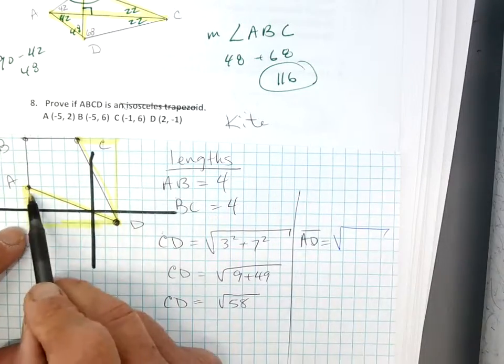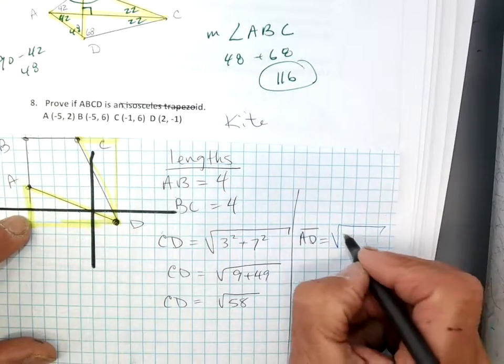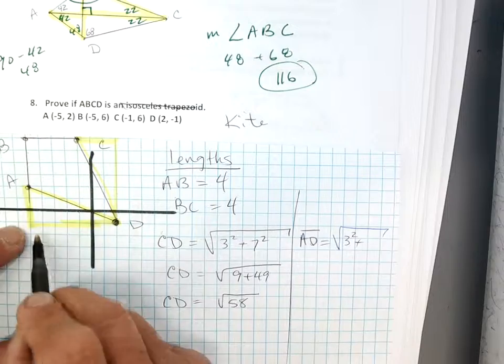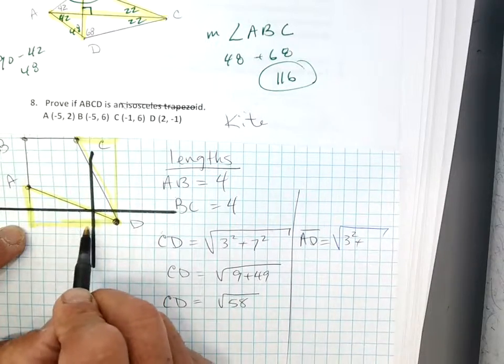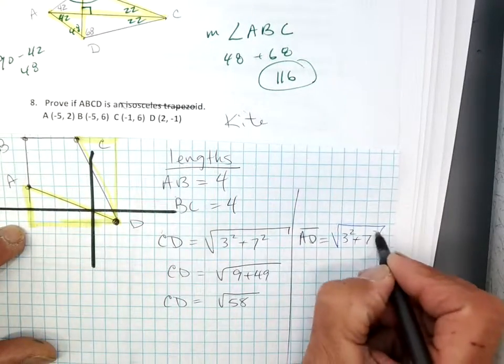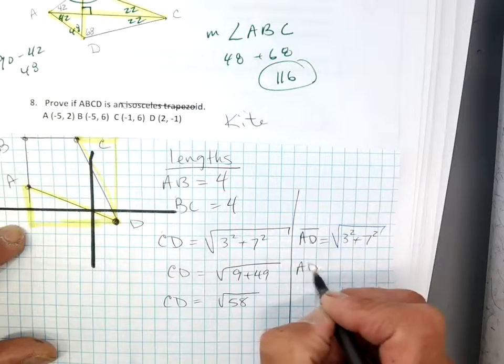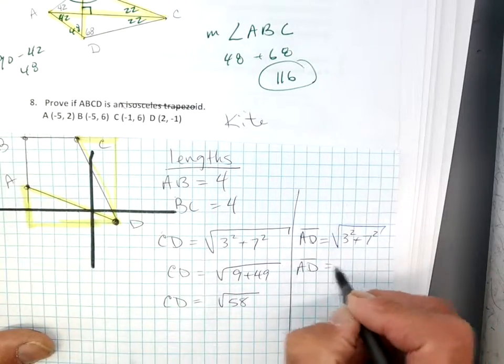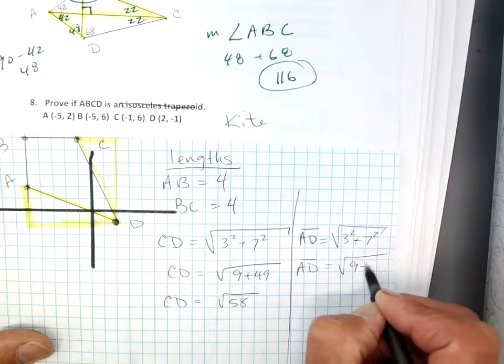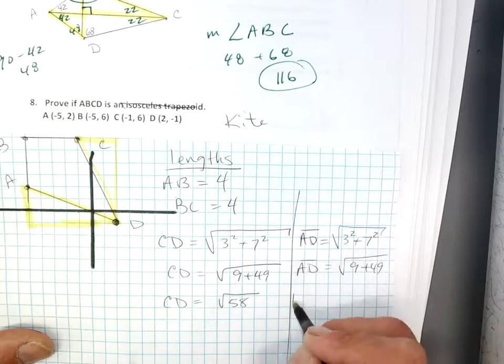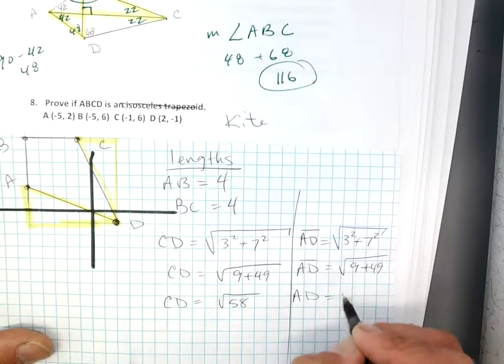And we're going to do the same thing, use Pythagorean's theorem here. So I'm going to make equals the square root of, let's see what I've got. I've got a one, two, three, three squared plus one, two, three, four, five, six, seven squared. Same answer, right? Same answer, which is what we wanted. Nine plus 49 equals the square root of 58.